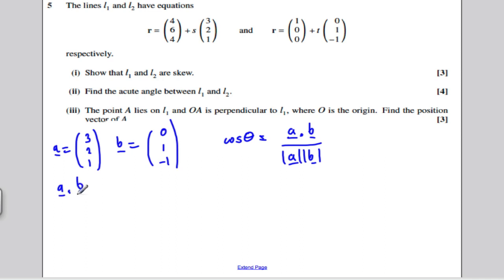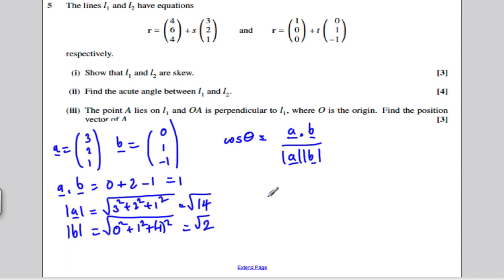What is A dot B? 3 times 0 is 0, 2 times 1 is 2, 1 times minus 1 is minus 1. So A dot B is 1. What's the modulus of A? It's the square root of 3 squared plus 2 squared plus 1 squared, which is 9 plus 4 is 13 plus 1 is 14. So this is the square root of 14. The modulus of B is the square root of 0 squared plus 1 squared plus minus 1 squared, which turns out to be the square root of 2.